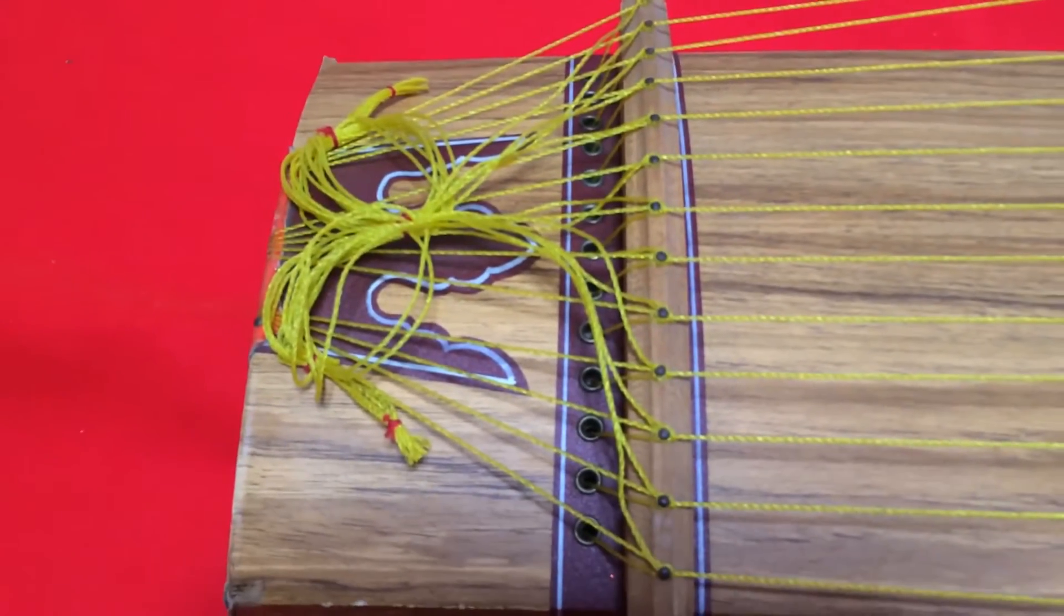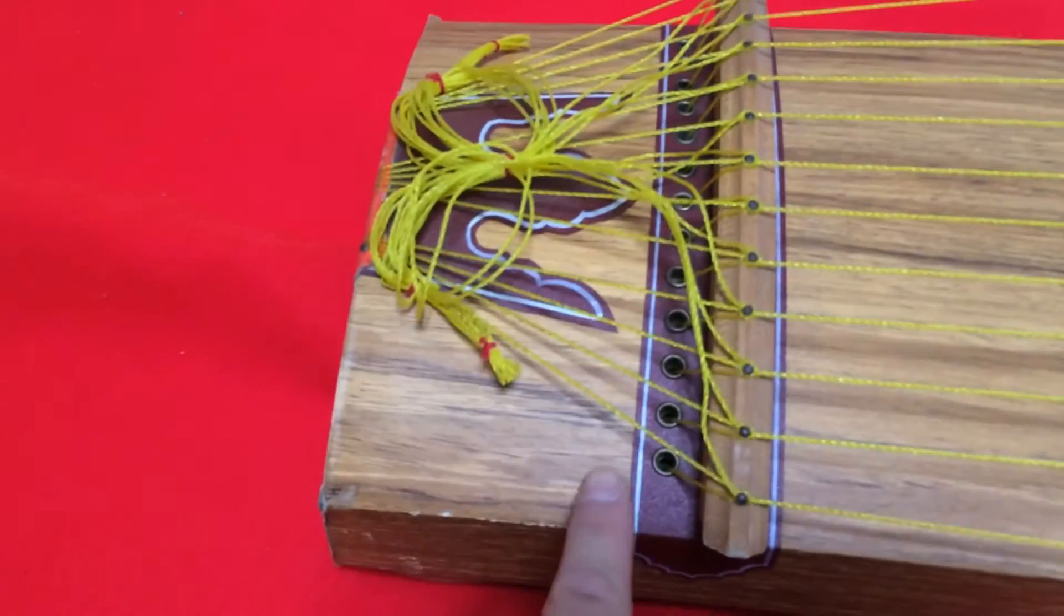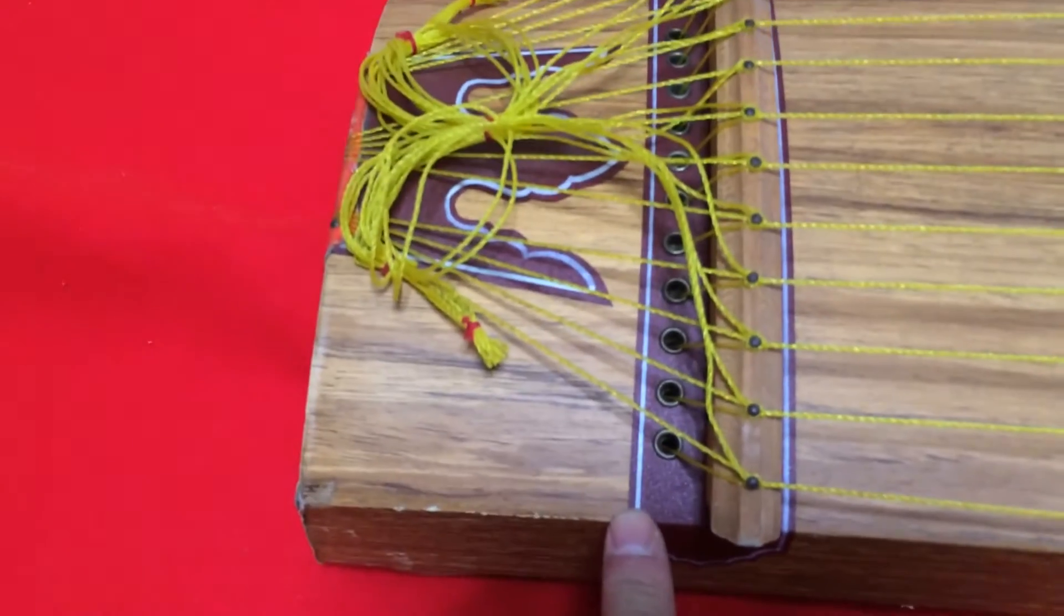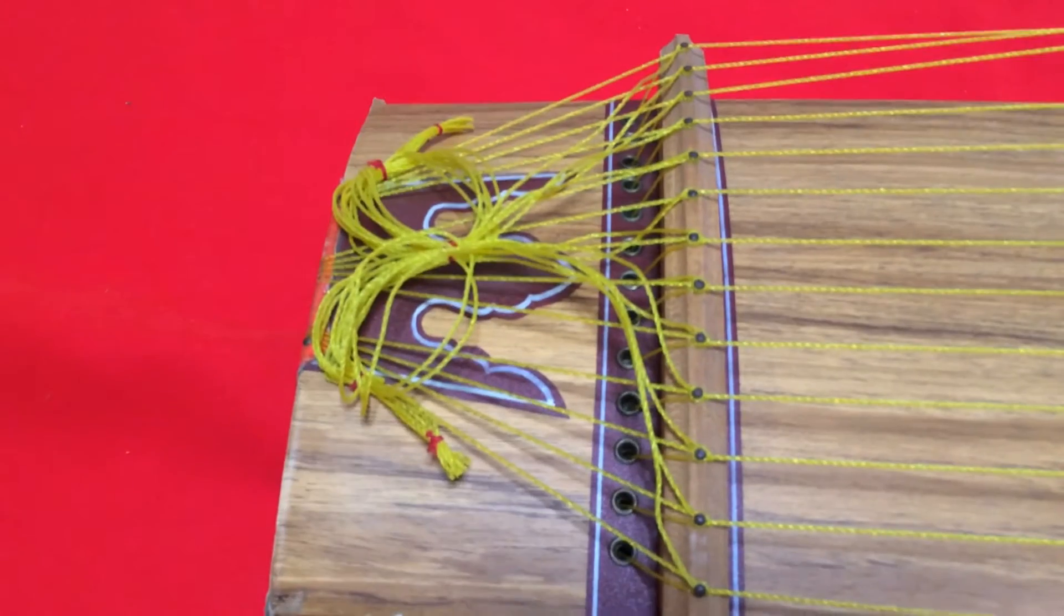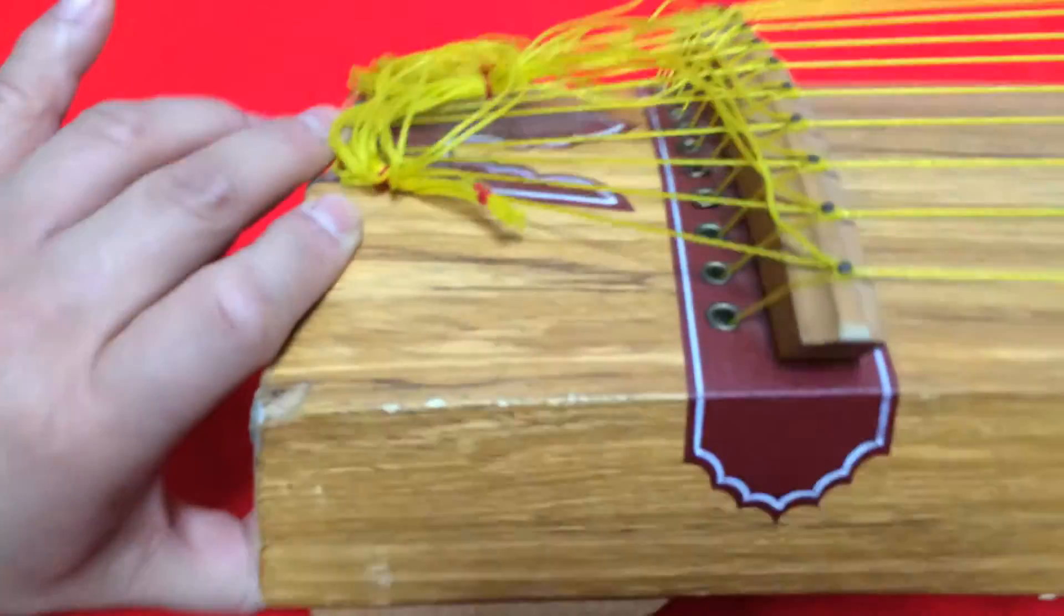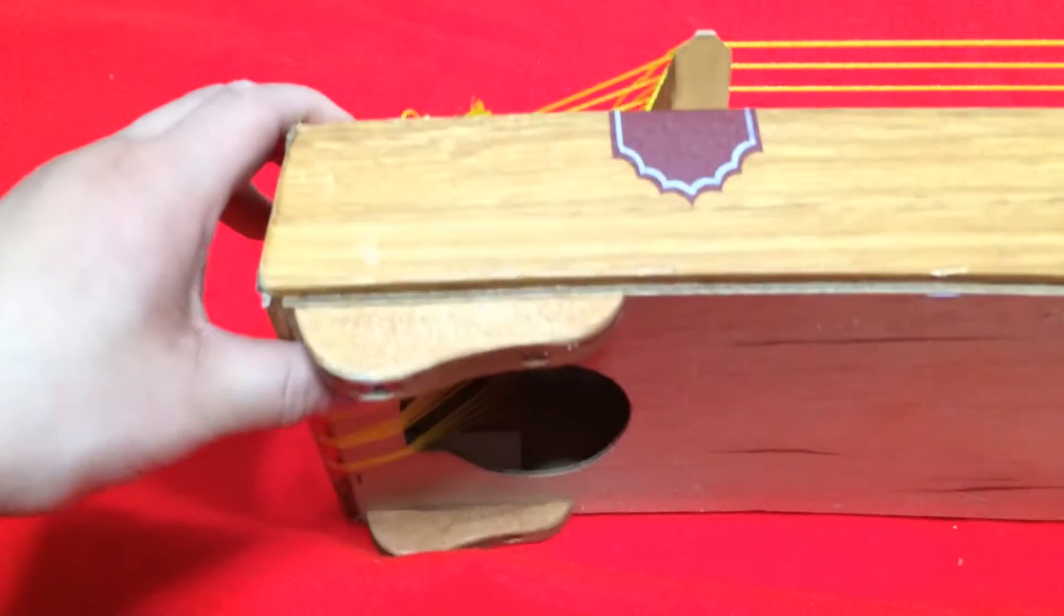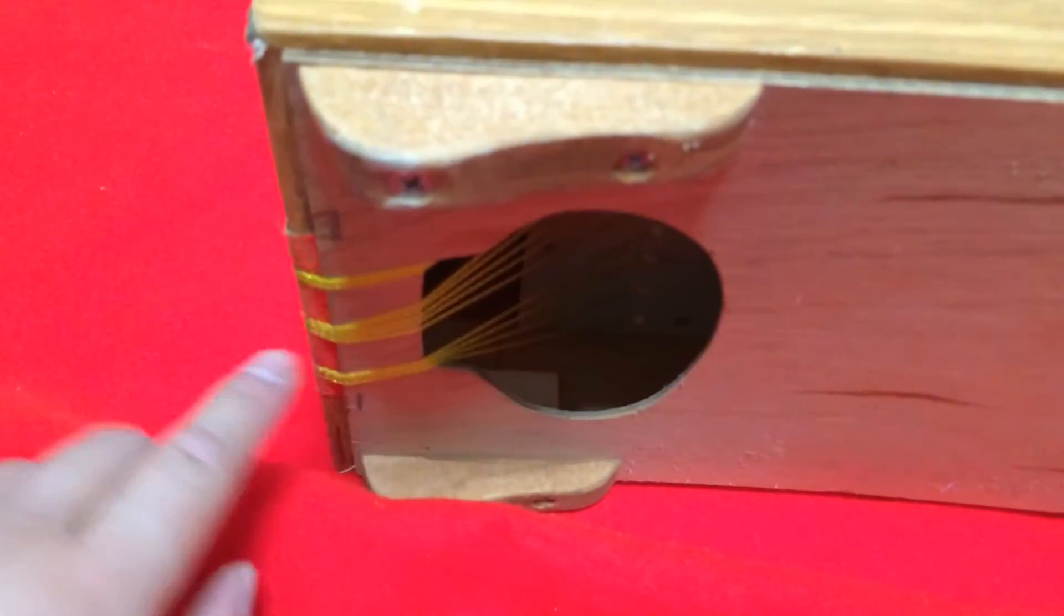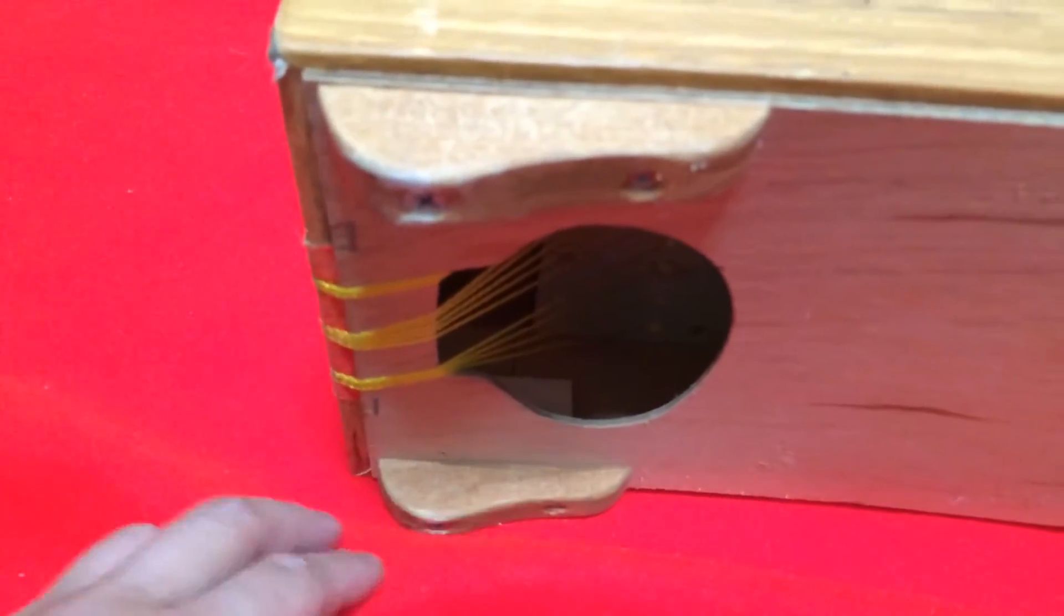Now let's take a look at the head where the strings are bound to the instrument. There's a piece of plastic here for decoration. Usually that's made from wood. So the strings go through those holes and then they are wrapped around, back to the front like this. And that's how you tie the strings and how you tune it.